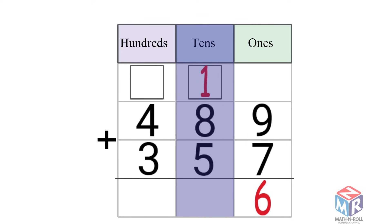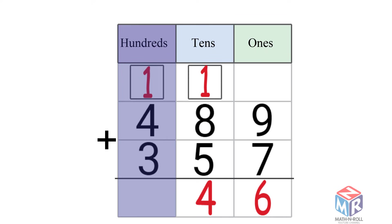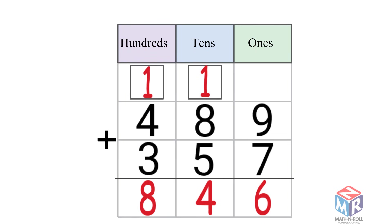Next, we add the tens. One plus eight plus five is equal to 14. Fourteen is a double-digit number, so we have to regroup it. We regroup fourteen into one hundred and four tens. We add the extra one to the hundreds column, and next we add the hundreds. One plus four plus three is equal to eight. So 489 plus 357 is equal to 846.